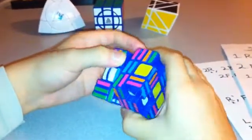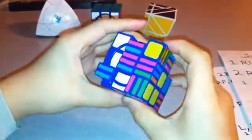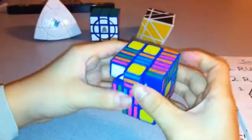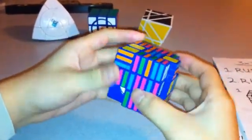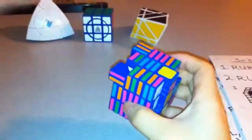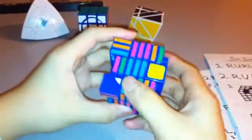That'll be L two layers in, F inverted, L, F, U, L twice, U inverted, and L inverted once. Now that solves these three edge pieces and there's only one left.